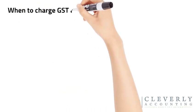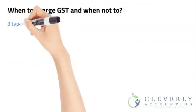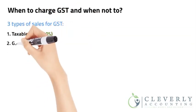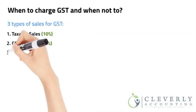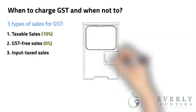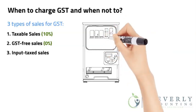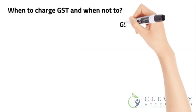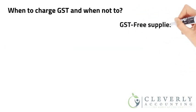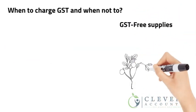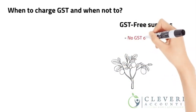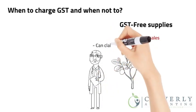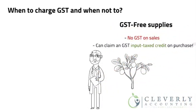When to charge GST and when not to: there are three types of sales for GST purposes — taxable sales at 10%, GST-free sales at 0%, and input tax sales. Most products and services sold or consumed in Australia are subject to 10% GST. GST-free supplies are not liable to GST, meaning the final supplier does not pay GST to the ATO on their supplies, but they are entitled to claim an input tax credit for the GST component of their costs.